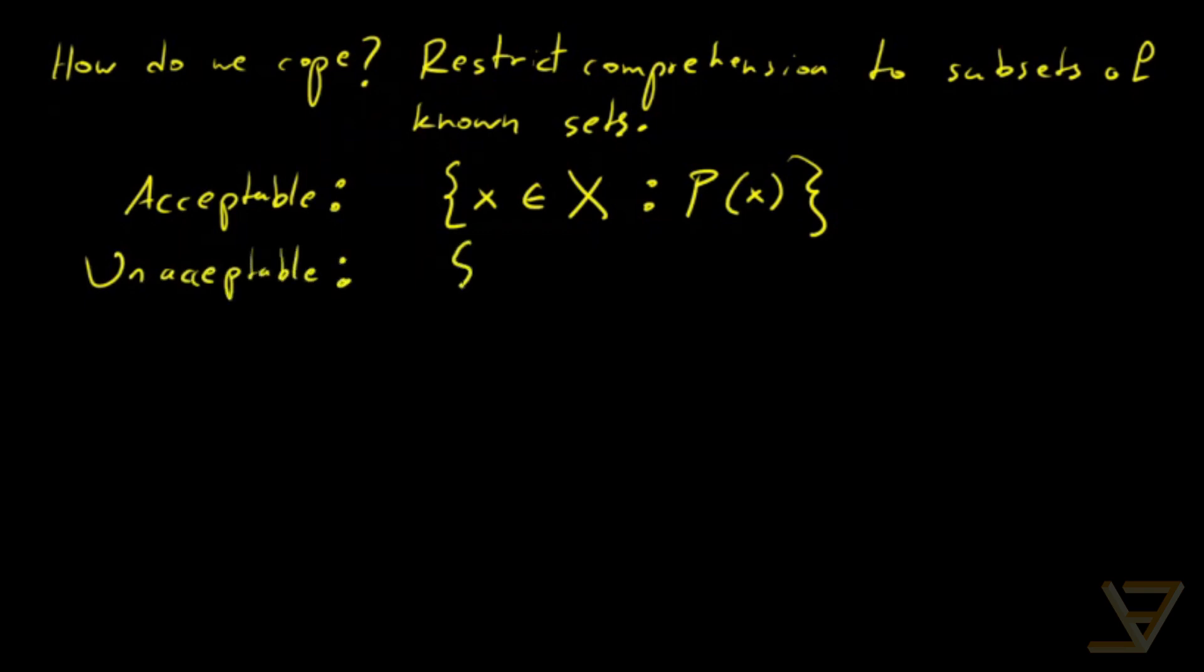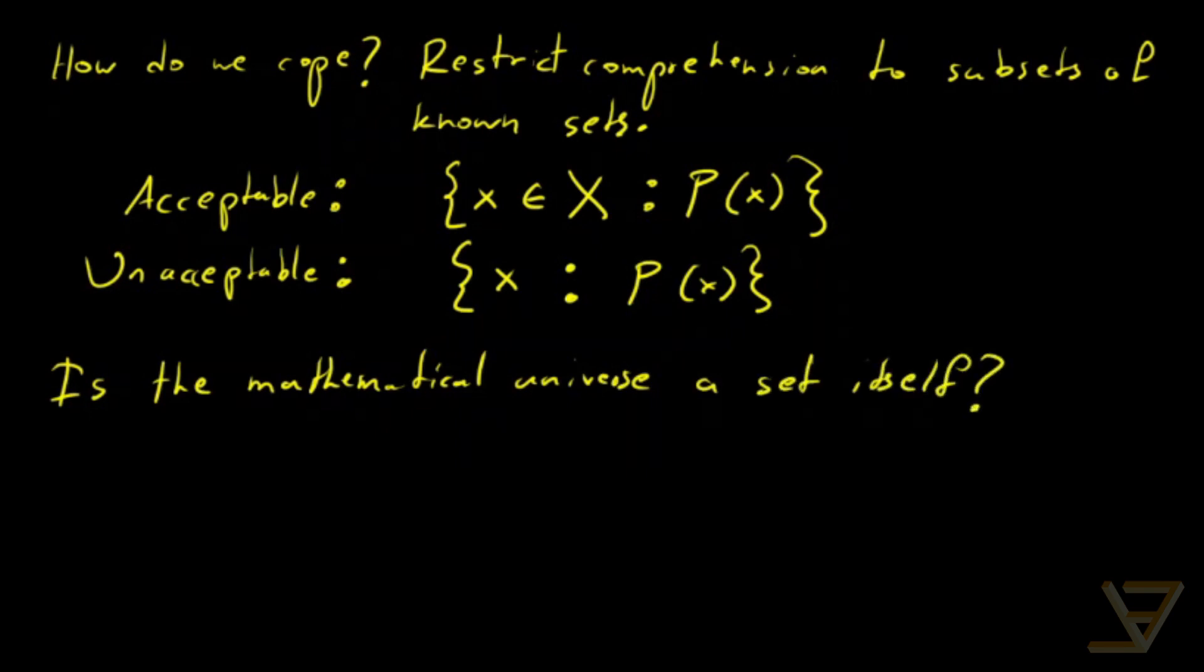Unacceptable is saying x is anything in the mathematical universe such that P(x) holds. So, that's the first thing but there's still an issue which is the question, it's actually a famous question of is the mathematical universe a set itself? We call this V. Suppose it is, then according to what's acceptable in terms of restricted comprehension, we can define the following set.